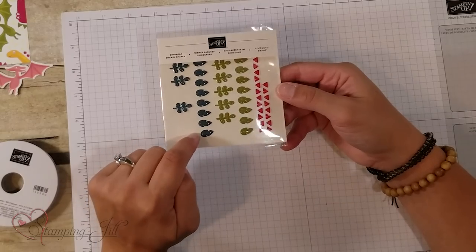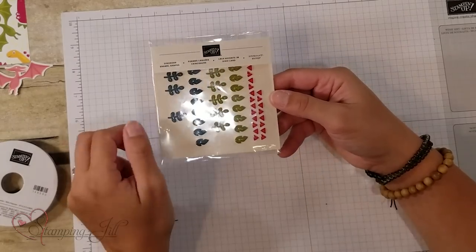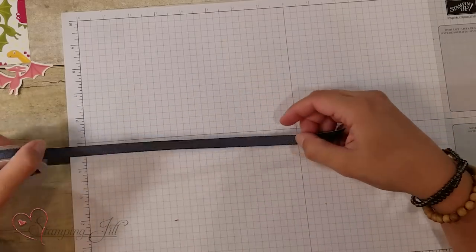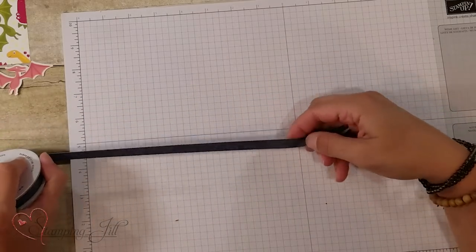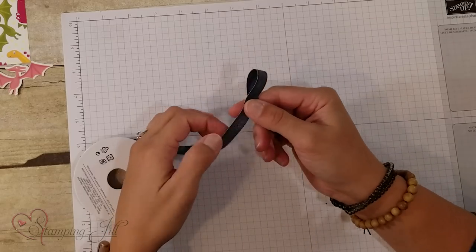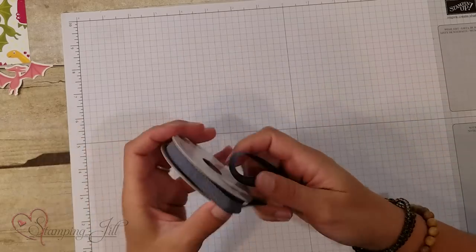There's these cute little enamel shapes. They come in pretty peacock, old olive, and lovely lipstick. And then there's this great ribbon. It's denim ribbon. It's got a great weight to it, so it's really easy to tie. It's got a little bit of a sheen to it.